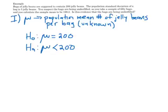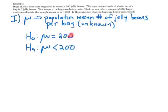I'm going to run through the inference toolbox. Step one is the parameter: mu, the population mean number of jelly beans per bag — that's unknown, exactly as in confidence intervals. Now there's a new part: H sub O stands for the null hypothesis, and H sub A stands for the alternative hypothesis. We think mu actually is 200 — that's what's supposed to be true. And we're checking whether the bags are under-filled, i.e., is mu actually less than 200.